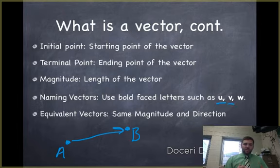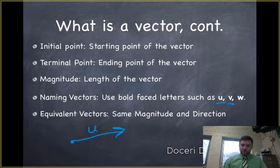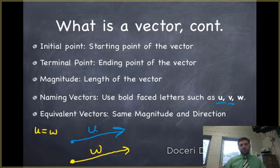Equivalent vectors are vectors that have the same magnitude and direction. So let's say, instead of naming this A, B, let's name this vector U. If we wanted to find the equivalent vector, we would find a vector — maybe W — that had the same length and direction. So U and W, we would say, are equivalent vectors, and we would write it like this: U equals W. If U equals W, they're equivalent vectors — they have the same magnitude and the same direction.